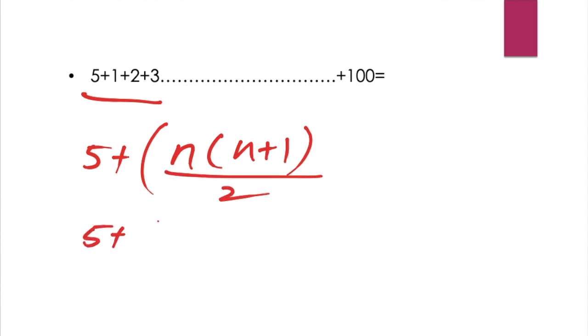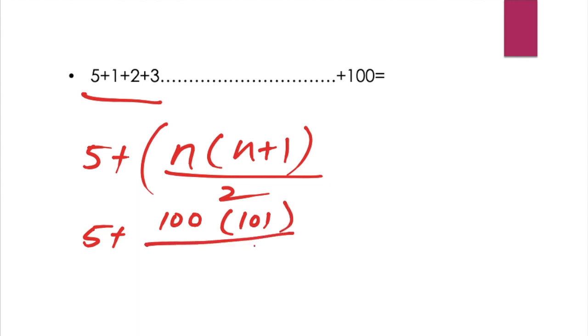5 plus n to x is 100. 100 plus 1 is 101. So, divided by 2.